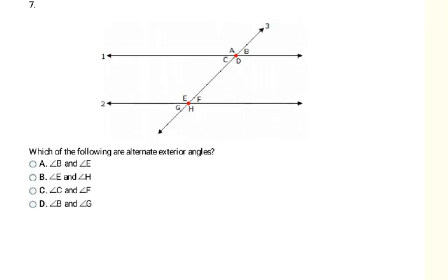Which of the following are alternate exterior angles? The exterior angles are A, B, G, and H. The two pairs on opposite sides are A and H, and B and G. The only one listed among the answer choices is D: B and G.